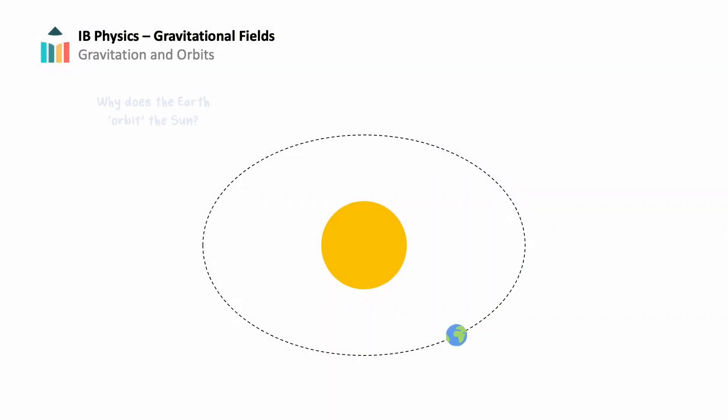Have you ever wondered why the Earth seems to be locked into an orbit around the Sun? Why do smaller bodies like the Moon revolve around larger bodies like the Earth? Why doesn't the Earth crash into the Sun? What forces are at play in these phenomena? We will delve into those mysteries that intrigued physicists for centuries. Welcome to Gravitation and Orbits.